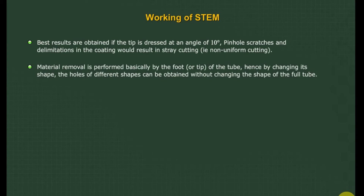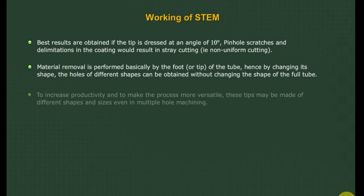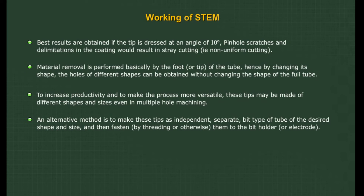Material removal is performed basically by the foot or tip of the tube; hence, by changing its shape, holes of different shapes can be obtained without changing the shape of the full tube. To increase productivity and make the process more versatile, tips may be made of different shapes and sizes, even in multiple-hole machining. An alternative method is to make these tips as independent, separate, bit-type tubes of the desired shape and size, and then fasten them — by threading or otherwise — to the bit holder or electrode.